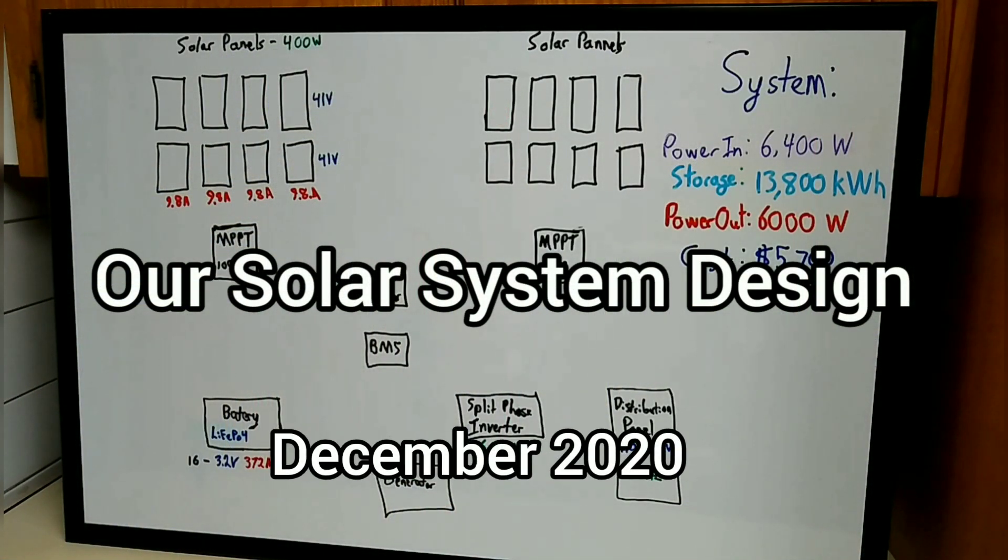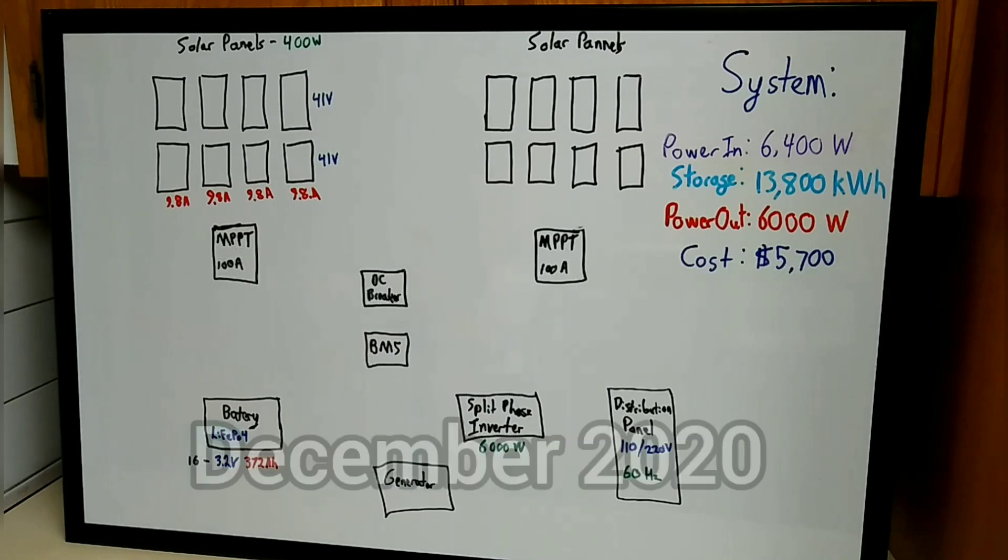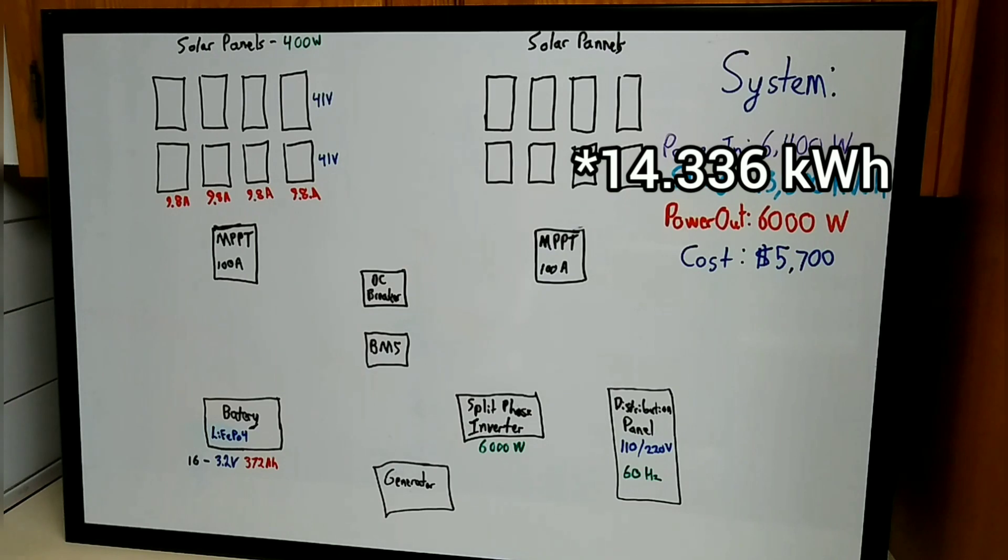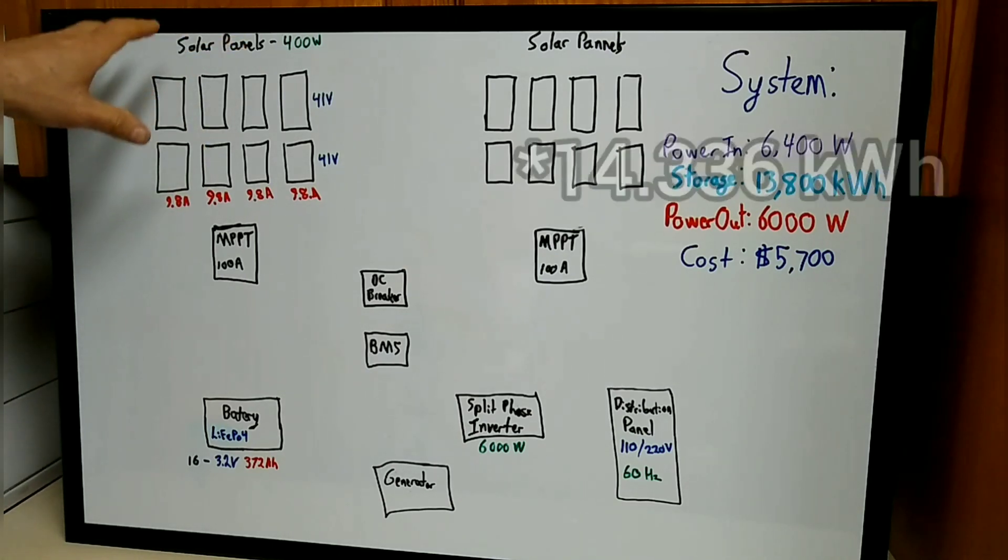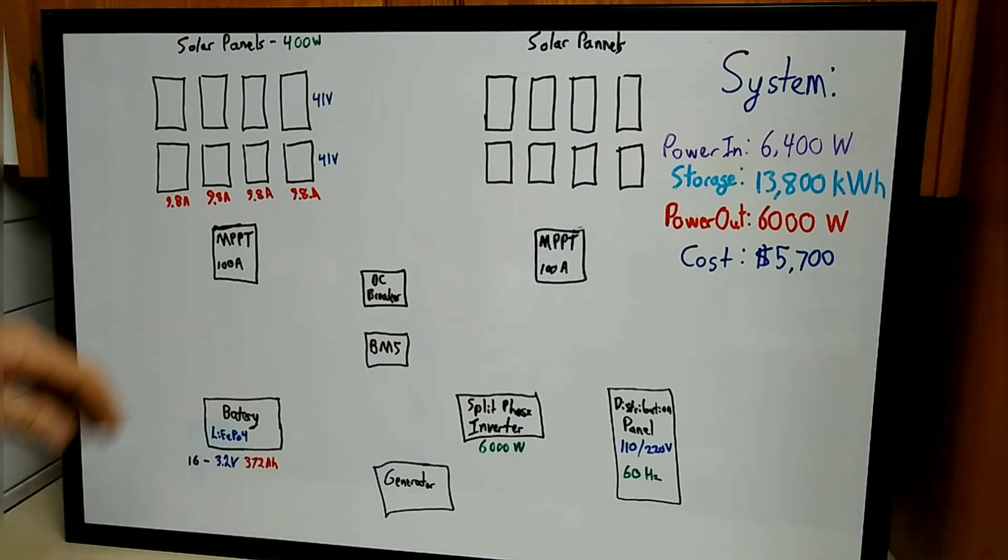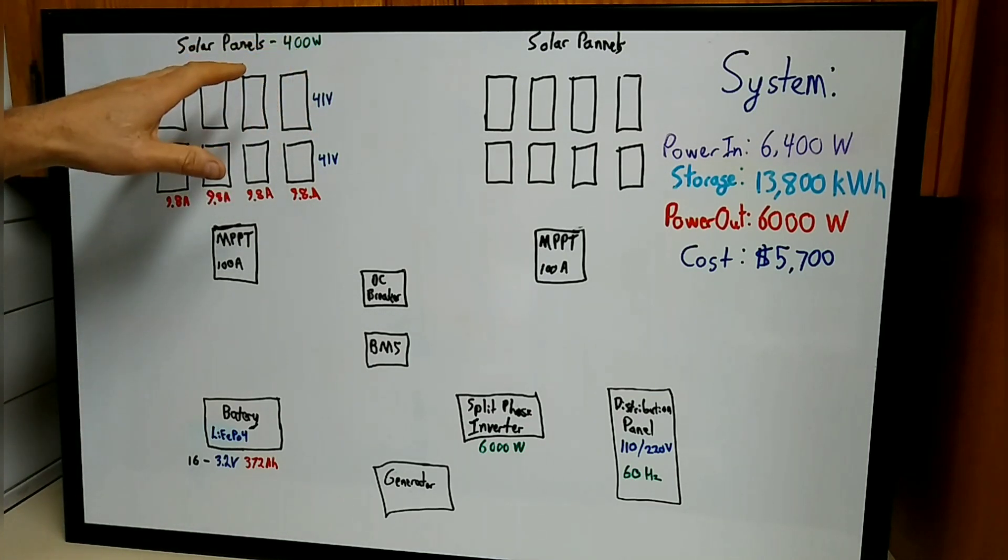I'll show you how the entire system works together first, then come back and show you more detail on some of the components. We'll start with the solar panels. Solar panels determine your total system input wattage. We're going with 400 watt Trina solar panels, total of 16.